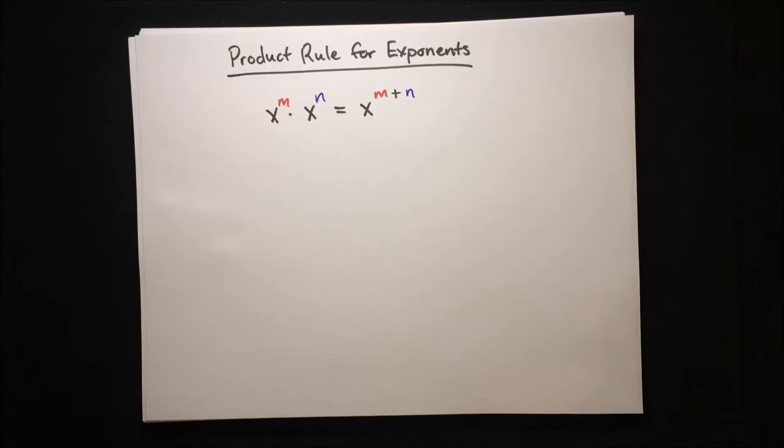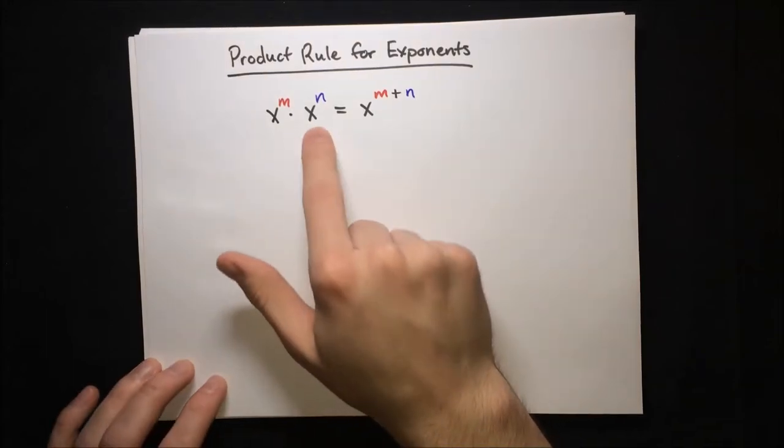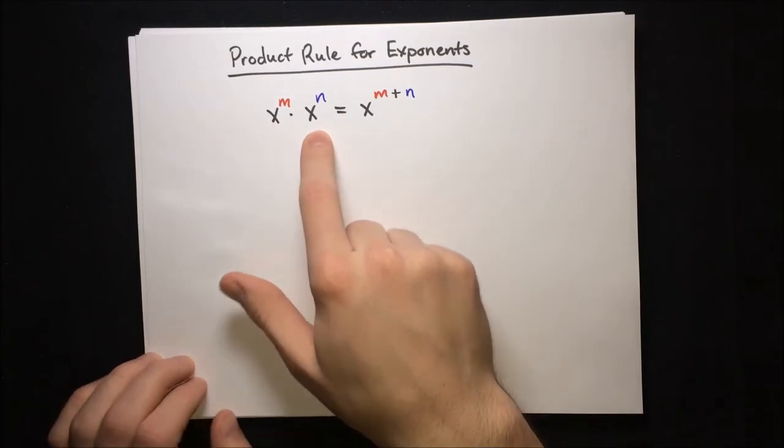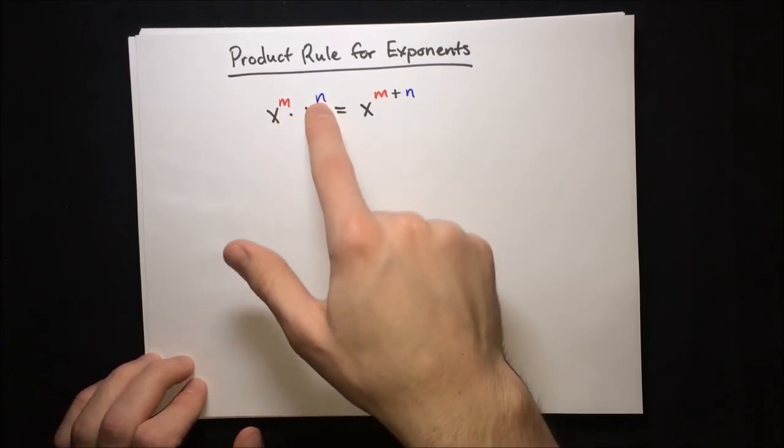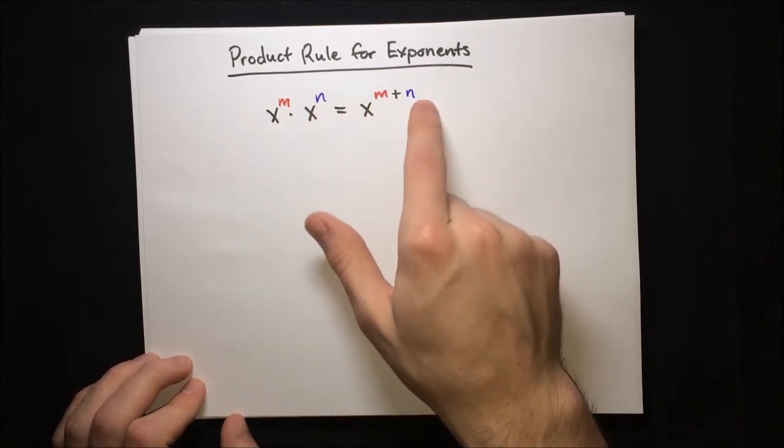In this video, I'm going to show you how to multiply two exponentiated numbers with the same base. The trick is that you just add the exponents. If you've got x to the m times x to the n, then the result is x to the m plus n.